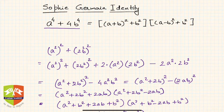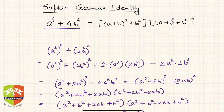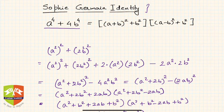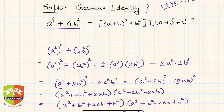Hello friends, welcome again to this session on algebraic identities. Today we are going to take up one new special identity called Sophie Germain Identity. Now, Sophie Germain was a French mathematician from 1776 to 1831, and she came up with this identity.